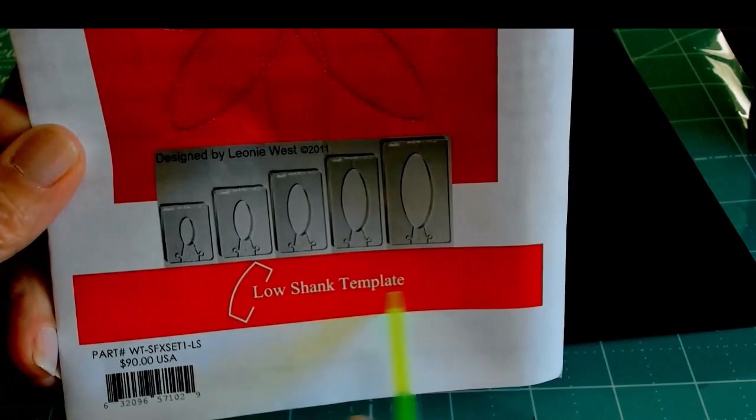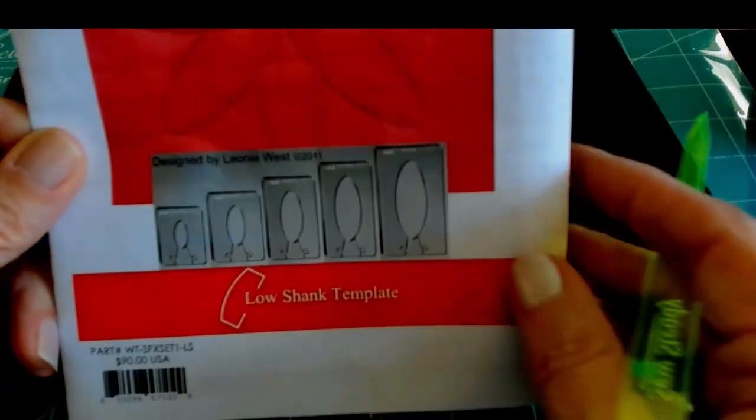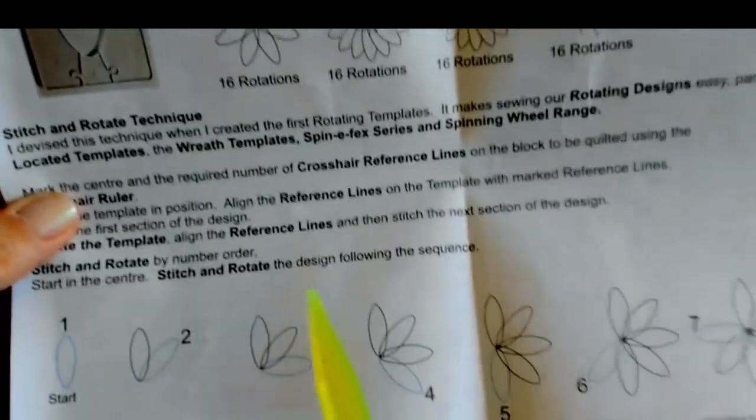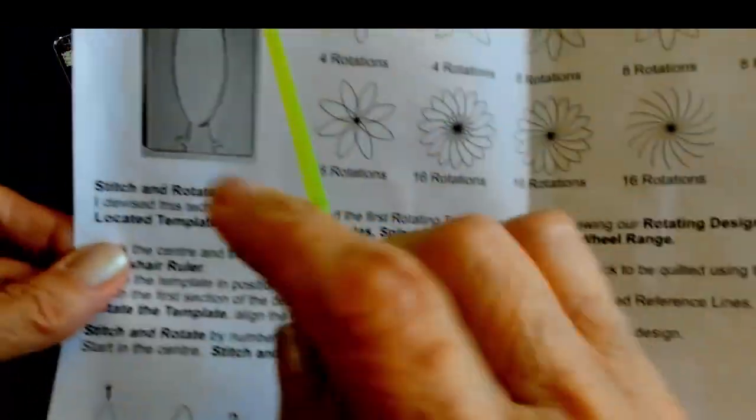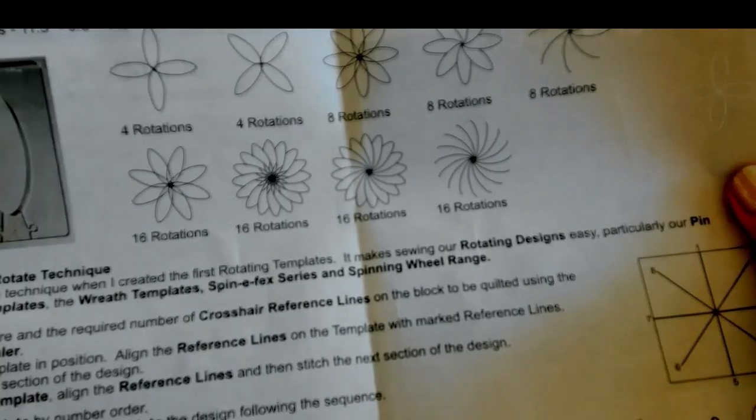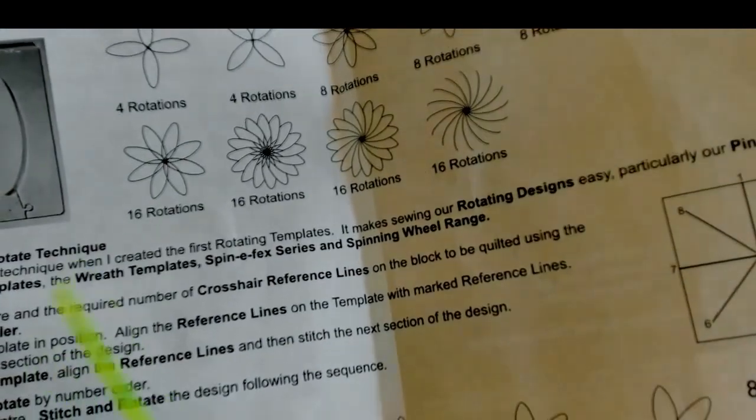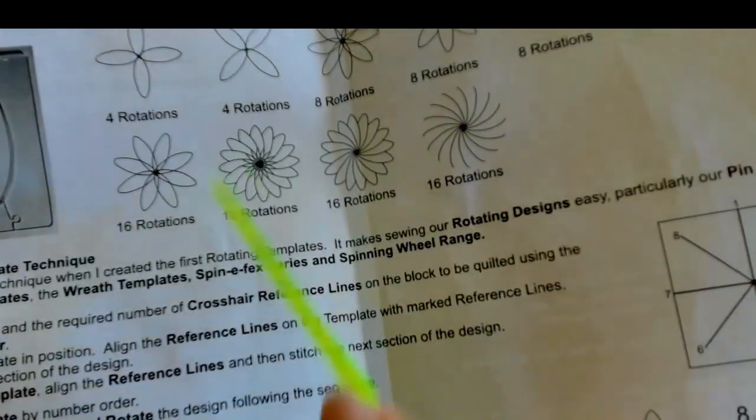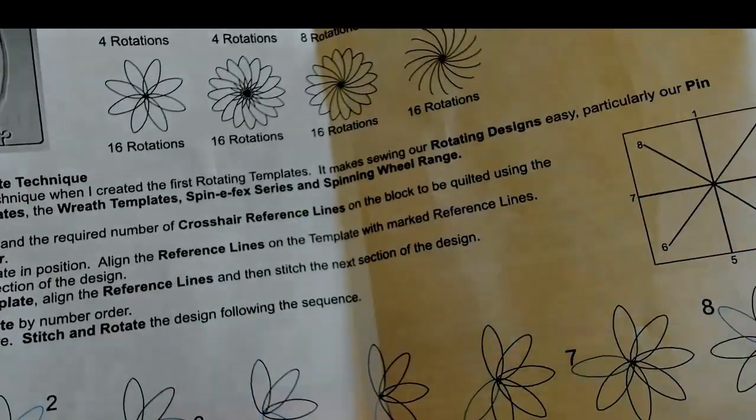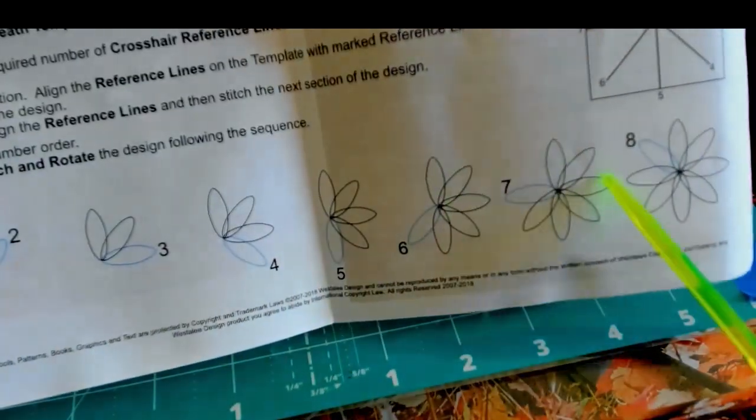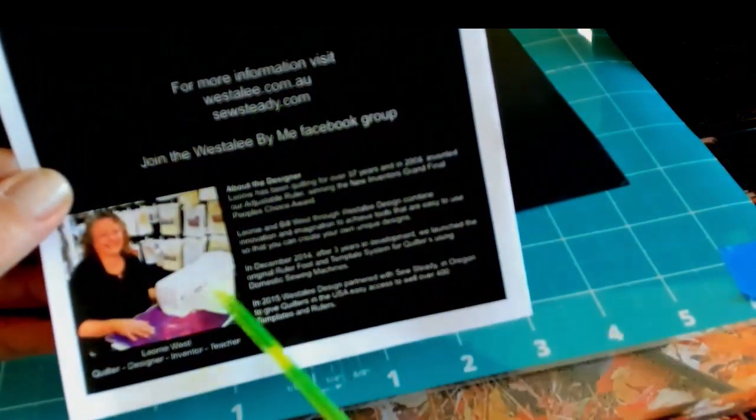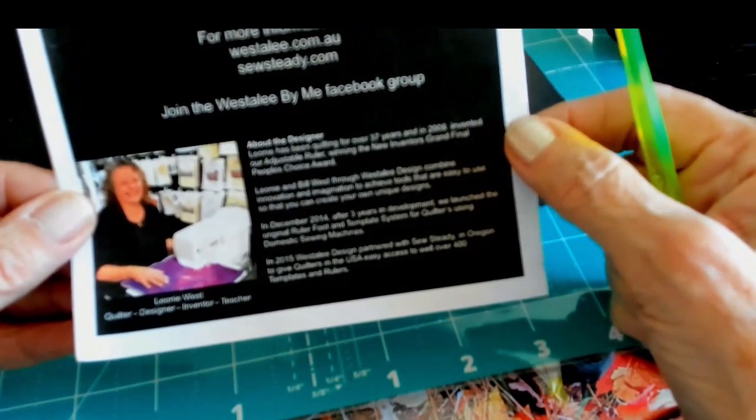I use a low shank template. My machine is a Vintage Singer 301 and it does call for low shank templates. And then when we open the instructions, it again says the sizes. It adds the mini. We actually do have a mini one and a half inch, a two and a half inch in the spin effects one. It will have pictures of different types of rotations, how many rotations there are. And it will give you some additional information in here and how the design will look as it's stitched out.